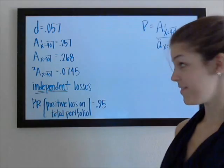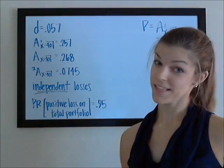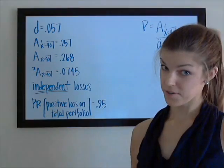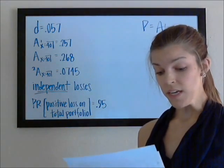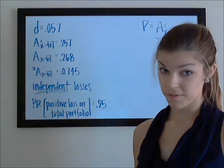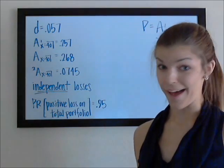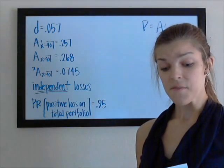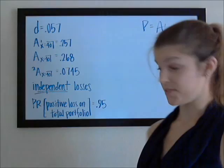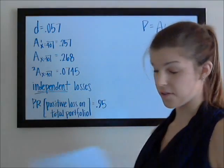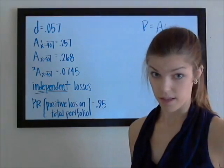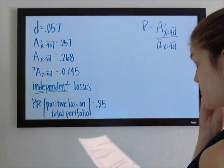I'm doing this problem because historically I've had a hard time with these, and I want to make sure I really understand it — and I want to make sure you understand it. The probability of a positive loss in the total portfolio is 95%, and they would like us to calculate N — how many of these policies did we sell with this mistakenly charged premium?